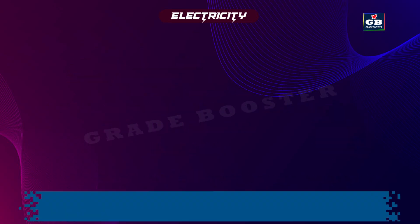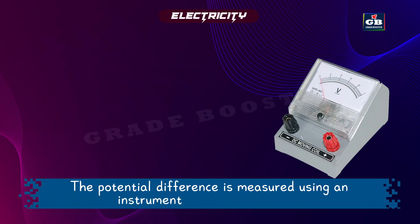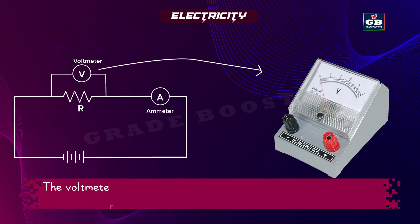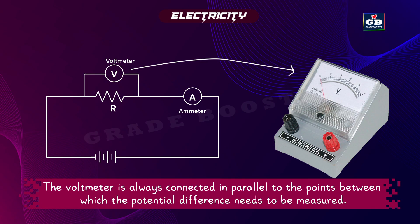The potential difference is measured using an instrument called a voltmeter. The voltmeter is always connected in parallel to the points between which the potential difference needs to be measured.